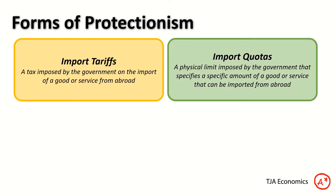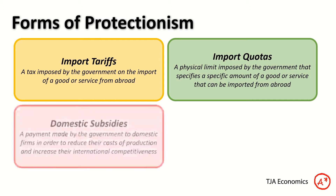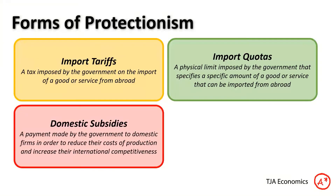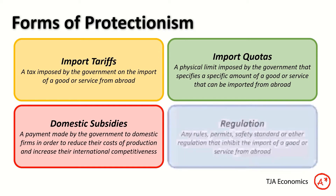We've then got import quotas, which is a physical limit imposed by the government that specifies a specific amount of a good or service that can be imported from abroad. We've then got domestic subsidies — payments made by the government to domestic firms in order to reduce their costs and increase their competitiveness. And lastly, regulation: any rules, permits, safety standards, or other regulations that inhibit or hinder foreign companies from importing to our nation.